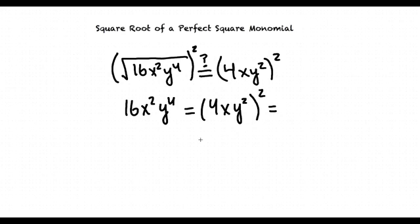Which is going to be equal to 4 squared, which is 16, times x squared, times y squared squared, which is y to the 4th. Since both sides of the equation are equivalent, we know that we achieved the correct answer.